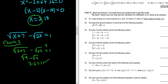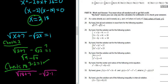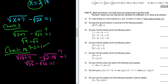Now let's check x equals 18. We have square root of 18 plus 7 minus square root of 2 times 18, which should equal 1. That's square root of 25 minus square root of 36, which is 5 minus 6, which equals negative 1 — not 1. So 18 fails and is an extraneous solution. It does not work.